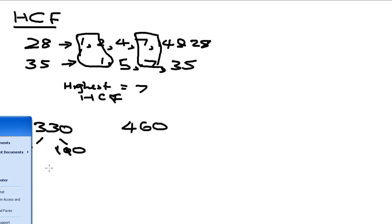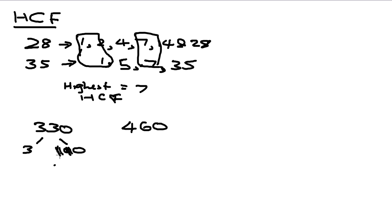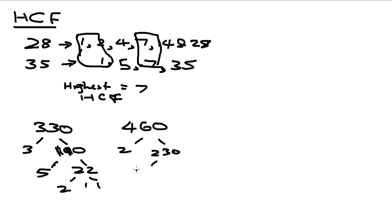So you break them down — sorry, it's 110. You break down 330 further to get 5 and 22, then break that down to 2 and 11. For 460, you break it down to 230, then to 2 and 115, then to 5 and 23.